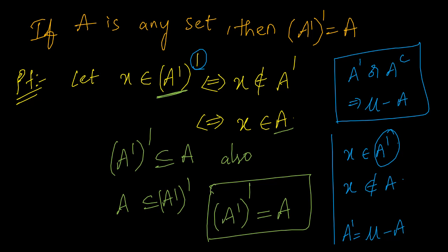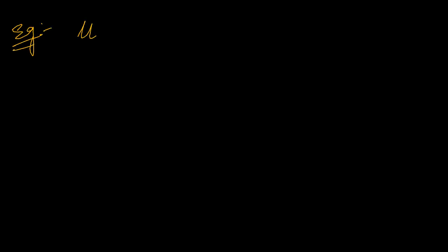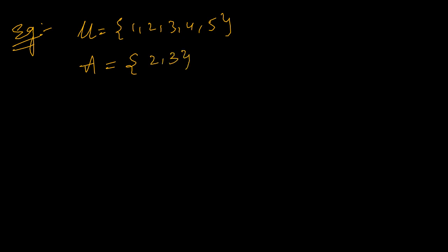Now let us take one example so that you can understand. For example, let us consider universal set as {1, 2, 3, 4, 5}. Let us consider A set as {2, 3}. So what we need to prove? We need to prove A complement, the whole complement, is nothing but A. We will be denoting A complement with this notation.